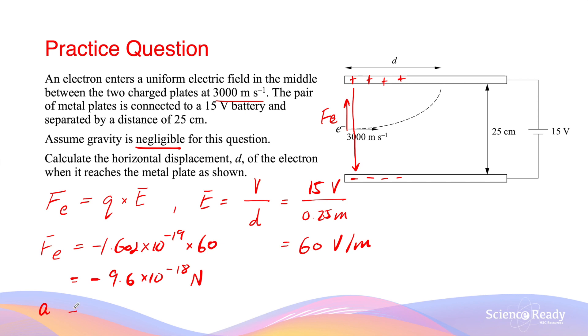The acceleration for the electron can be worked out by using Newton's second law, taking the force and dividing by the mass of the electron, which is 9.109 times 10 to the power of minus 31 kilograms. This gives me an enormous acceleration of 1.1 times 10 to the power of 13 meters per second squared. This is the reason why we can assume that the acceleration due to gravity is negligible, because 9.8 meters per second squared is an extremely small number compared to the acceleration due to the electric field.